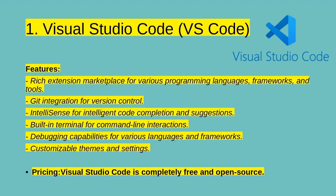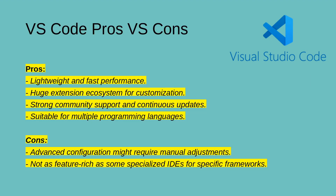Visual Studio Code is completely free and open source. It is lightweight with fast performance, has a huge extension ecosystem for customization, and offers strong community support with continuous updates, making it suitable for multiple programming languages. On the cons side, advanced configuration might require manual adjustments, and it is not as feature-rich as some specialized IDEs for specific frameworks.